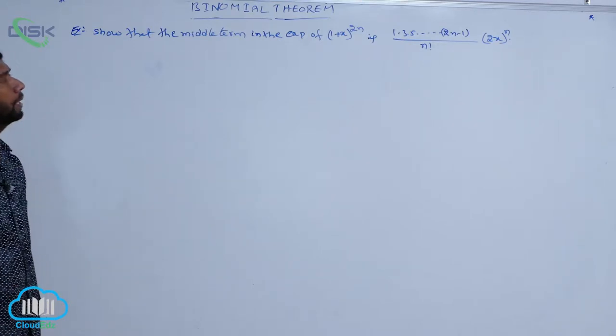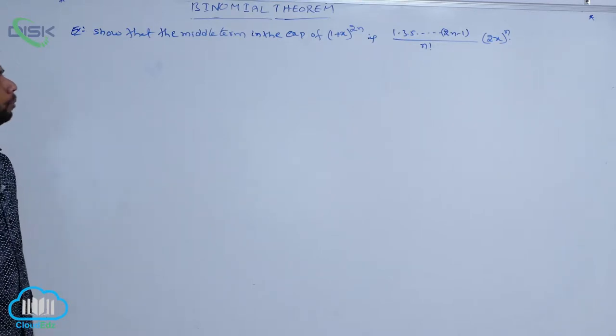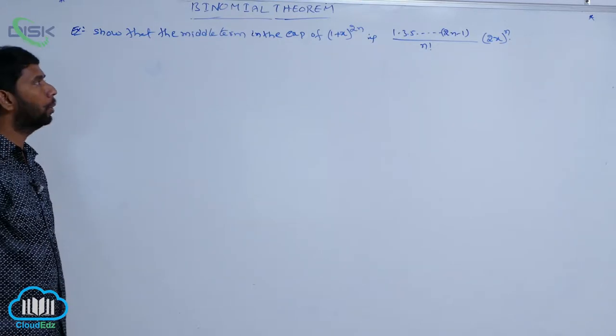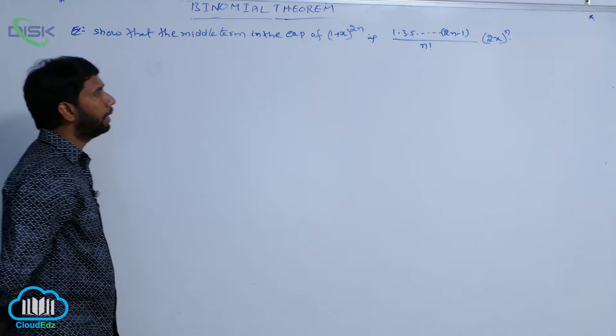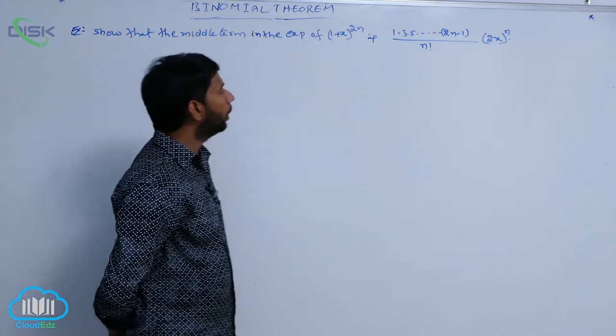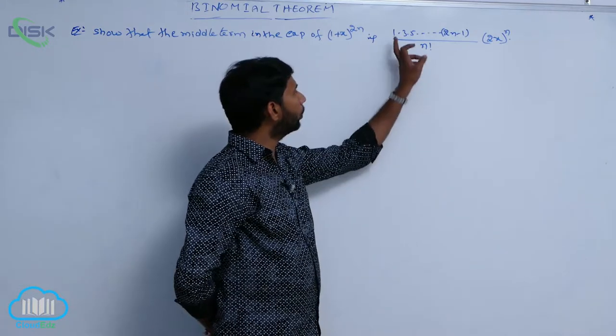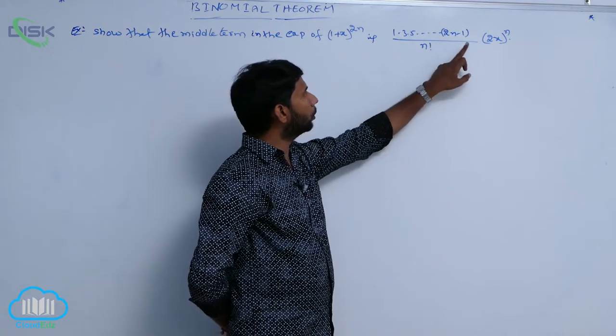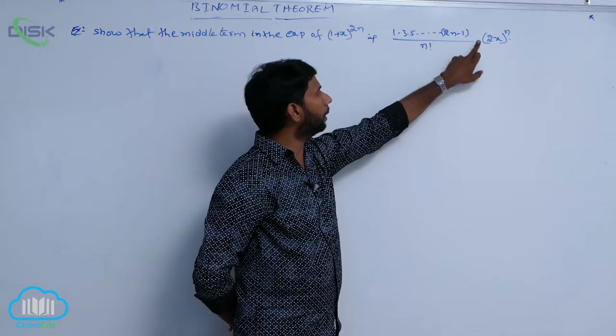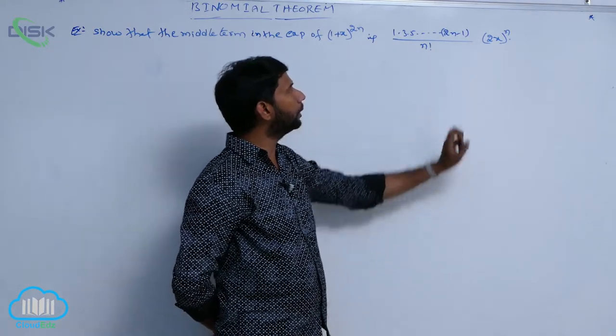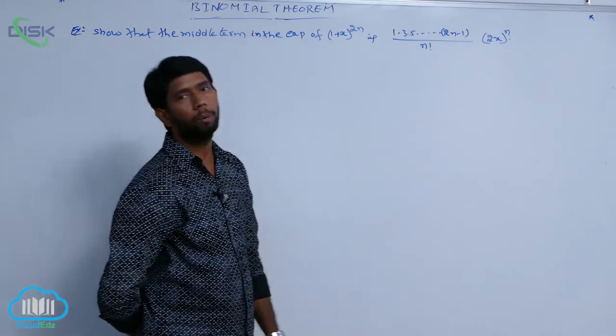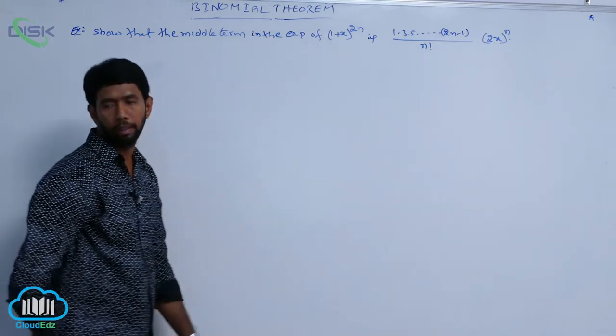Show that the middle term in the expansion of (1+x)^(2n) is [1·3·5···(2n-1) / n!] into (2x)^n.